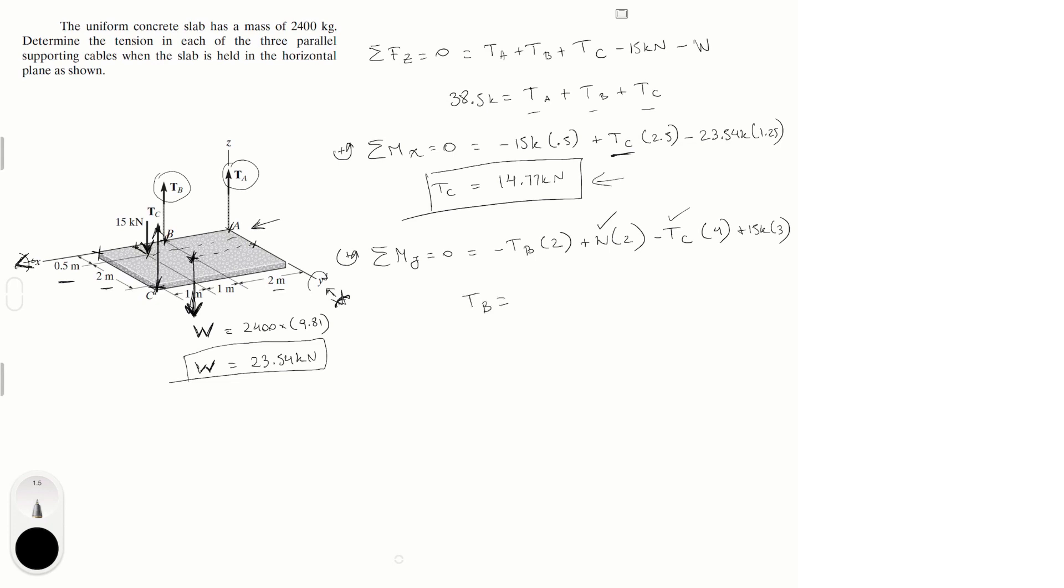Now if we go back to equation one, and we plug in tension B and tension C and solve for tension A, you should get that tension A is equal to 7.23 kilonewtons. Final answer for tension A, final answer for tension B, and final answer for tension C.